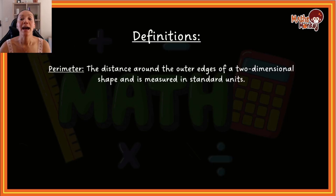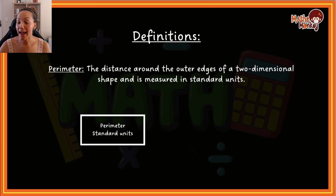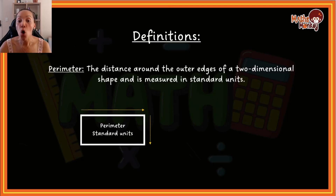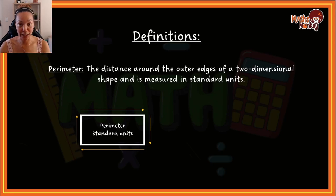Perimeter is the distance around the outer edges of a two-dimensional shape and is measured in standard units. So if I have a rectangle and I want to calculate the perimeter, I'm calculating what the lengths of the outside sides are added together. If all of these sides are in centimeters, then my answer is going to be in centimeters. All you're doing when calculating perimeter is adding the outside edges.